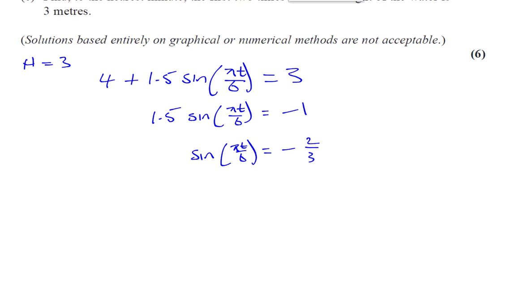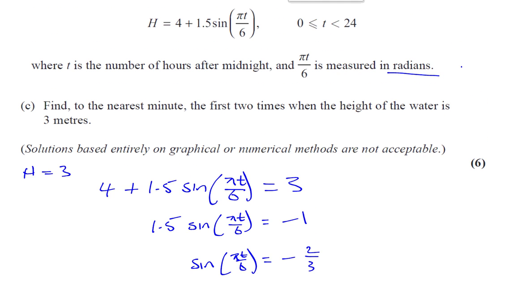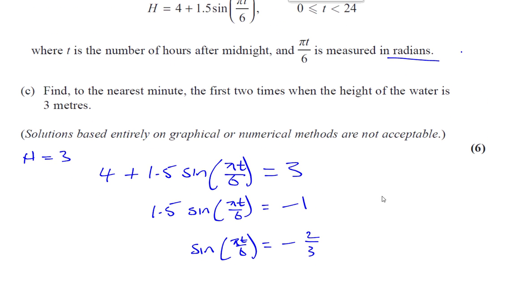Now we're almost ready to start solving the equation. However, we've got to take into account the fact that we're given the limits 0 is less than t less than 24. We have to change this so that this matches our equation as it's given. We've got this multiple angle here, so we're going to have to multiply both of these by pi over 6. 0 multiplied by anything is 0, and 24 times pi over 6 gives you 4 pi. So 0 is less than or equal to pi t over 6 less than 4 pi.